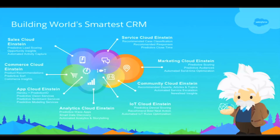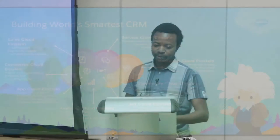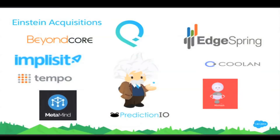What we are working on is building the world's smartest CRM — embedding artificial intelligence into every cloud and every product of Salesforce: Sales Cloud Einstein predictive lead scoring, Service Cloud recommendation and case classification, App Cloud which is like Roku plus Prediction IO. Over the past year Salesforce has been doing a lot of data science acquisitions from BeyondCore, Implicity, PredictionIO, RelateIQ, and EdgeSpring.